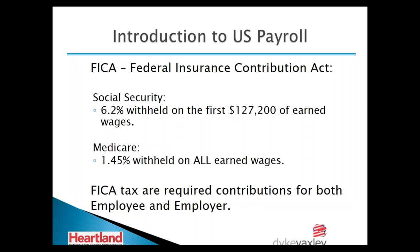The $127,200 Social Security wage base has been increasing in recent years. Comparing to the UK: employee national insurance is roughly 12% up to a certain level then drops to 2%, similar to the Social Security and Medicare bracket structure. However, UK employer national insurance at 13.8% applies to all wages with no cap, unlike the US Social Security wage-base limit. The UK percentages are also higher overall.